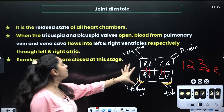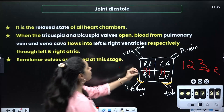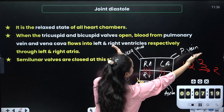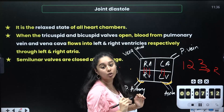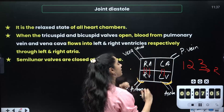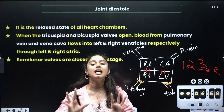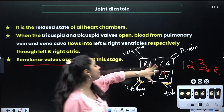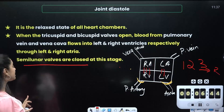Now, once all the chambers are relaxed, and we have the vena cava and pulmonary vein bringing blood in, the blood flows into the atriums and from there falls into the ventricles. If the cuspid valves are open, blood falls through. If the semilunar valves are also open, it fills all four chambers. This is called joint diastole.